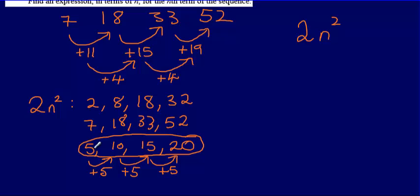I've got a first term of 5, a second term of 10, a third of 15. Well, this is just the linear sequence, 5n.